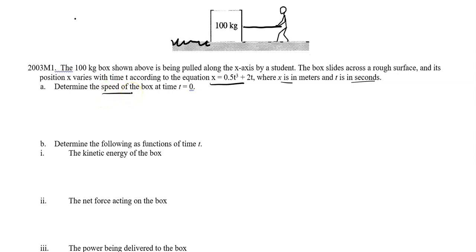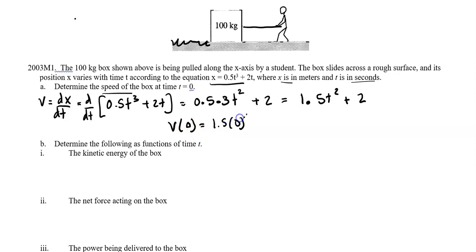So we have a box sliding across a rough surface, and its position x varies with time according to this equation: x = 0.5t³ + 2t, where x is in meters and t is in seconds. For part A, we want to find the speed of the box at time t equals 0. So if I want to find speed and I know position, I'm going to have to take that derivative. Velocity is the derivative of position with respect to time. I always like to write it all out - AP Exam loves you writing out things, and it helps you avoid silly mistakes. Using the power rule, this is 0.5 times 3, which gives us 1.5t² + 2. At t equals 0, the velocity is just 1.5 times 0² plus 2, so we're left with 2 meters per second.